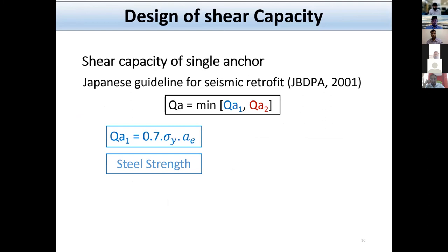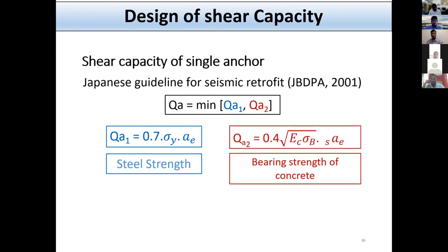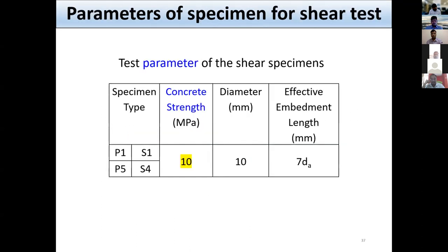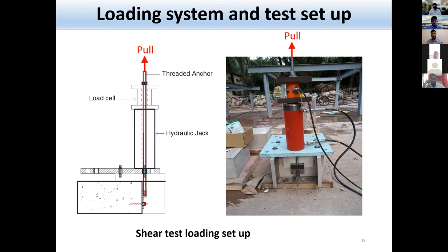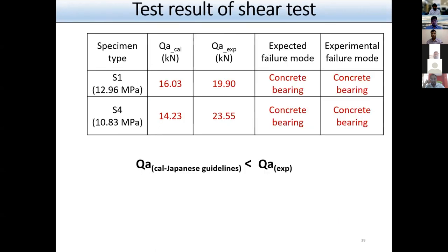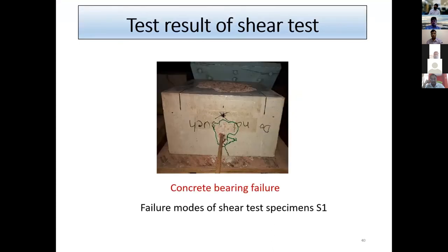Turning to shear capacity, the Japanese guideline states that the shear capacity of a single anchor should be the minimum of QA1, determined by steel strength, and QA2, determined by bearing strength of the concrete. For the full-scale test, two types of specimens were selected. The setup followed ASTM E488. Experimental results confirmed that the Japanese guideline predicted the shear capacity of post-installed bonded anchors in low-strength concrete conservatively, and the expected failure mode matched the experimental failure mode.